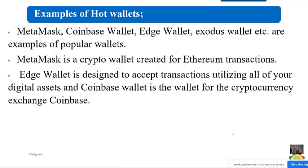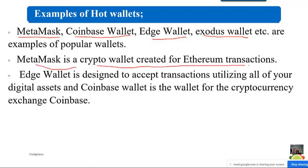Examples of hot wallets include MetaMask, Coinbase Wallet, Edge Wallet, and Exodus Wallet, among others. These are some of the most popular. The MetaMask wallet is a crypto wallet created for Ethereum transactions — it is an Ethereum-based blockchain wallet. The Edge Wallet is designed to accept transactions utilizing all your digital assets.